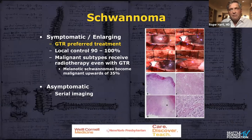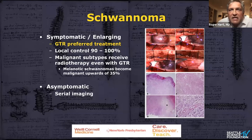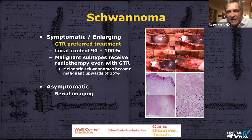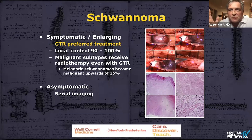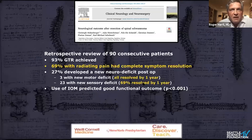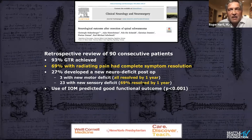Very rarely do schwannomas become malignant. There's an entity called the melanotic schwannoma, which has pigments inside and has a higher chance of becoming malignant. But for the most part, these are low-grade benign lesions with local control with surgery of 90 to 100%. If they become symptomatic, the treatment is surgical. If they're small and asymptomatic, we will frequently follow these patients with serial MRI scans — another MRI in six months — and if it looks like they're growing, that would be an indication to remove them surgically.